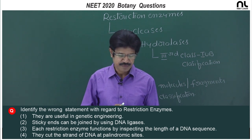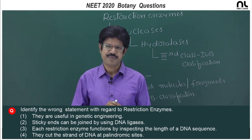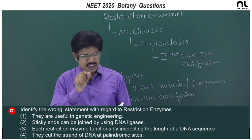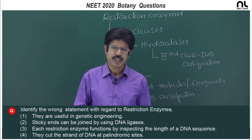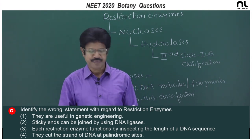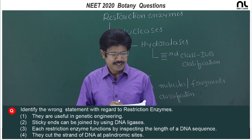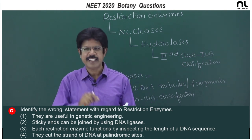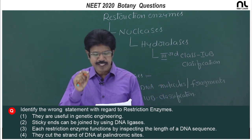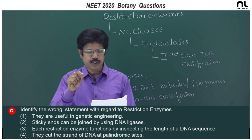This question appeared in 2020 NEET from Botany. The topic is biotechnology — it seems to have ambiguity, but it is tricky with intricacy. The question asks: identify the wrong statement with regard to restriction enzymes. The options are: (1) they are useful in genetic engineering; (2) sticky ends can be joined using DNA ligases; (3) each restriction enzyme functions by inspecting the length of DNA sequence; (4) they cut the strand of DNA at a palindromic site.